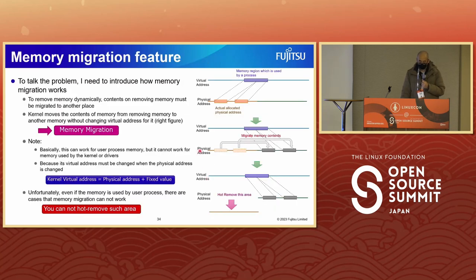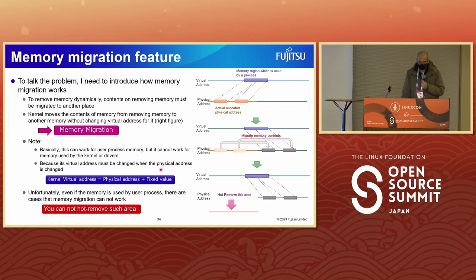To discuss the problem, I need to introduce how memory migration works. To remove memory dynamically, the contents of the removing memory must be migrated to another place while keeping the virtual address unchanged — this is memory migration. Basically this works for user process memory, but it cannot work for memory used by the kernel or drivers, because the virtual address must be changed when the physical address changes. Even for user process memory, there are cases where memory migration cannot work, and you cannot hot-remove such areas.